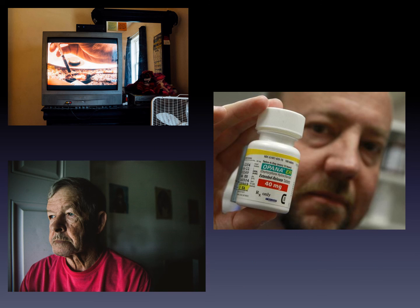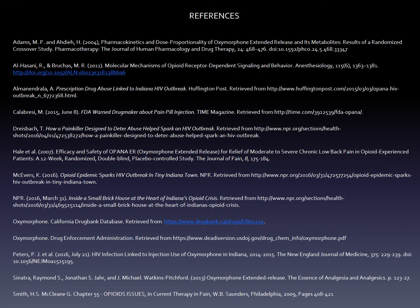Oxymorphone undergoes metabolism in the liver, and its extended release form reaches its peak potential about an hour after consumption. The drug and its metabolites all reflect dose proportionality, meaning its pharmacological effects increase linearly with increases in dose — a useful marker for physicians when prescribing higher doses as needed. Overall, I hope you all learned something new today about Opana and the current public health crisis it's causing across the U.S. Thanks for listening.